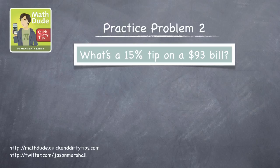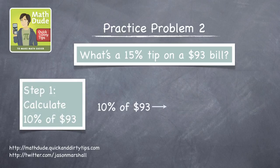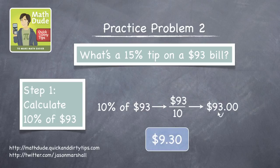How about a 15% tip on a $93 bill? Again, start by calculating 10% of $93. Moving the decimal point one place to the left, it's $9.30.